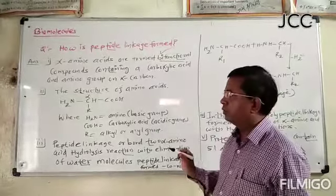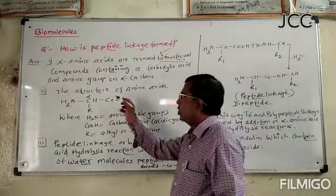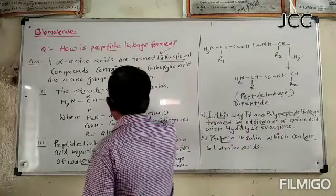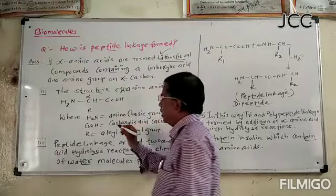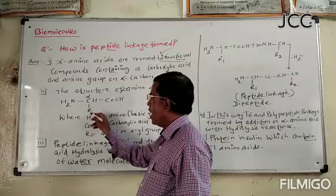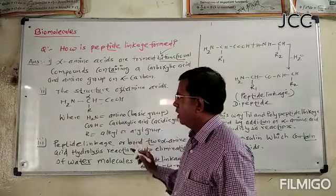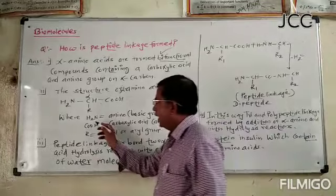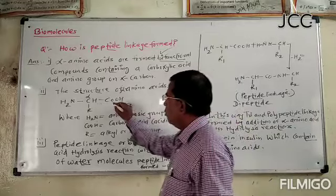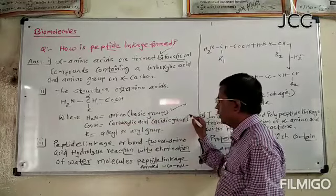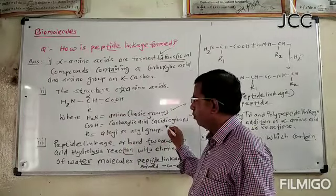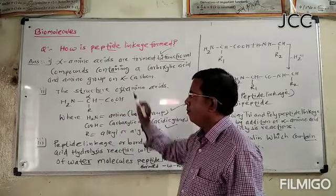The structure of alpha amino acids: NH2 single bond CH, single bond R, single bond COOH. In this structure, the NH2 group is the amino group — this is the basic group. The COOH group is the carboxylic acid group. R is the alkyl group. This is the structure of alpha amino acids.